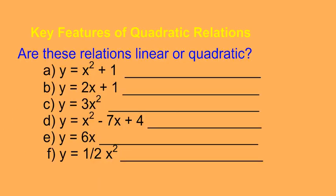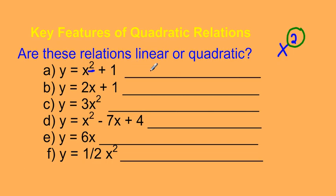Are these equations linear or quadratic? If it's a quadratic relation, it always has a degree of 2 — meaning you're looking for that x squared term. So which of these are quadratic? y equals x squared plus 1 has a degree of 2, so it is indeed quadratic.